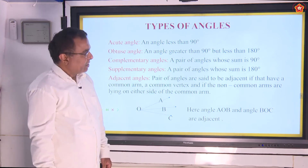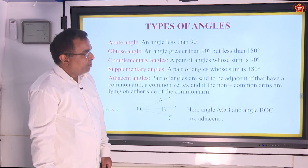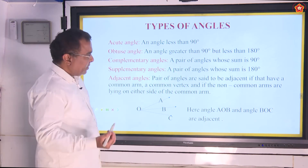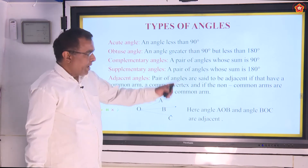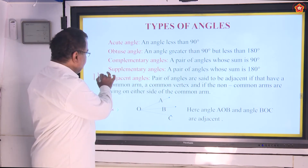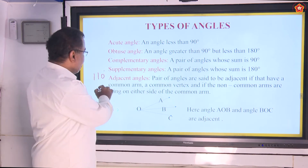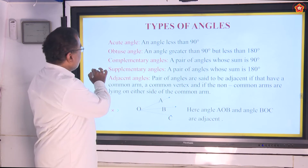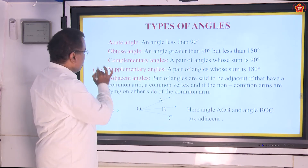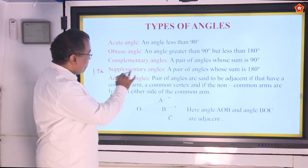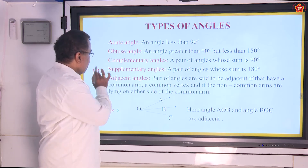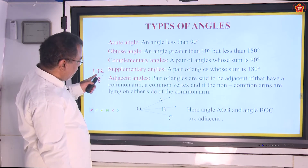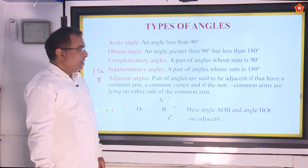Next, what are supplementary angles? The pair of angles whose sum should be equal to 180 degrees. You can give numerous examples, but the condition is the pair of angles' sum should be equal to 180 degrees. For example, 110 degrees — if the sum has to be 180 degrees, the other angle is going to be 70 degrees. Similarly, if 172 degrees is one angle in that pair of supplementary angles, the other angle is going to be 8 degrees, making the sum 180 degrees.